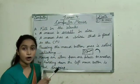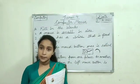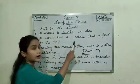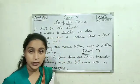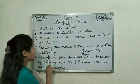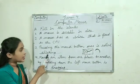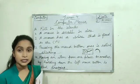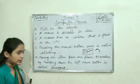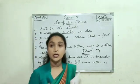Now, spellings: spelling of small — S-M-A-L-L, small. Spelling of wire — W-I-R-E, wire. Spelling of clicking — C-L-I-C-K-I-N-G, clicking. Spelling of dragging — D-R-A-G-G-I-N-G, dragging.